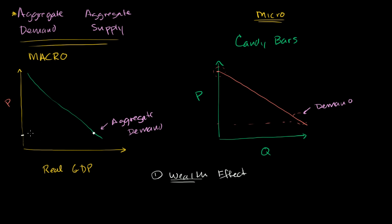So that's the wealth effect. They will go and demand more goods and services because with what they have in their pocket, they can buy more things. Likewise, if people woke up the next morning — all other things equal — and the price of everything doubled, they'd say they can't buy anything anymore. Everything's too expensive; they'll demand fewer goods and services. The wealth effect is one theory that explains why, all other things equal, you would have a downward sloping aggregate demand curve.